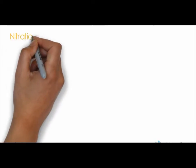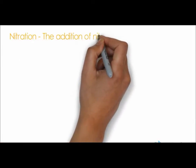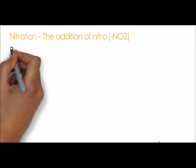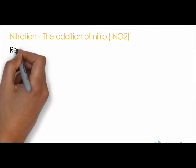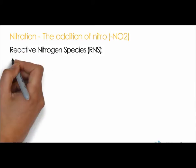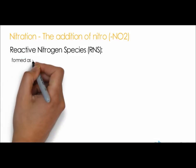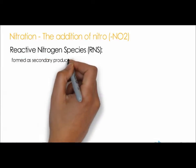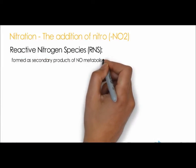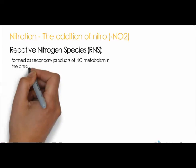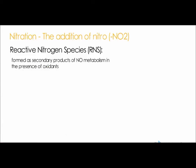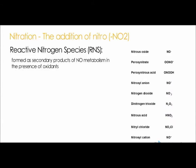Moving on, we will look at nitration, which is the addition of an NO2 group as a result of nitrosative stress. The addition of the nitro group is mediated by reactive nitrogen species, RNS. RNS are formed as secondary products of NO metabolism in the presence of oxidants. Here is a list of RNS such as peroxynitrite anion, a potent biological oxidant, and nitrogen dioxide.